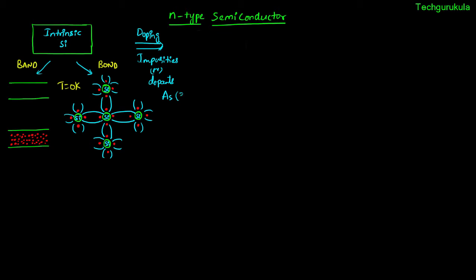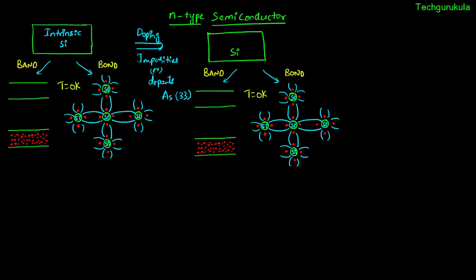Arsenic's atomic number is 33. Once we dope this intrinsic semiconductor it won't be pure semiconductor anymore. The modified semiconductor crystal is represented as silicon — no longer intrinsic. Because the impurities we add are in small quantities, the basic structure of silicon doesn't change. I have taken the same band and bond model from the left hand side.